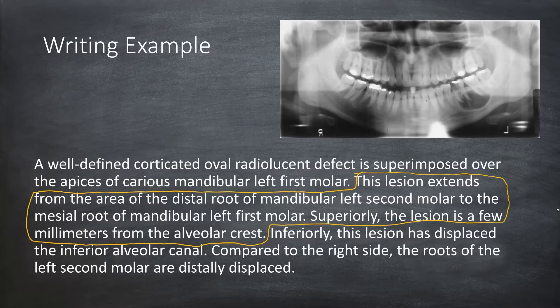Here I am describing the size of the lesion. I will not use terms like 'a large lesion' or 'a small lesion' — such descriptive terms are not precise enough. A panoramic radiograph is often magnified and distorted, so I am not providing the size in millimeters or inches. If I see this lesion on a CT or CBCT scan, I will provide size in millimeters. I have intentionally remained non-precise by using the phrase 'a few millimeters from the alveolar crest.'